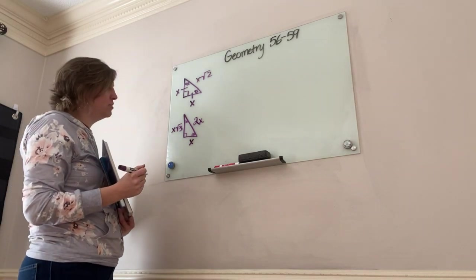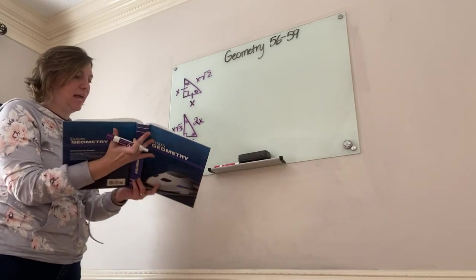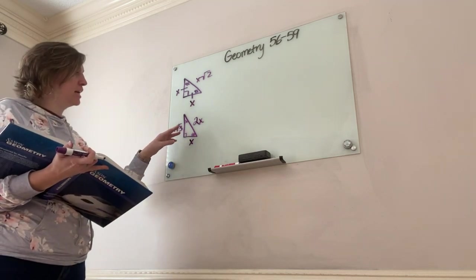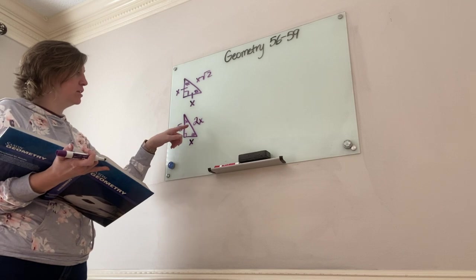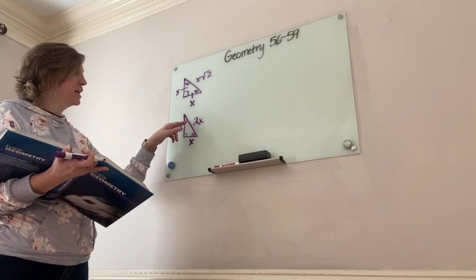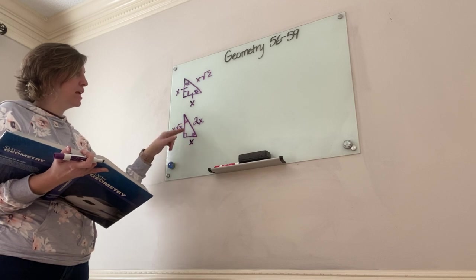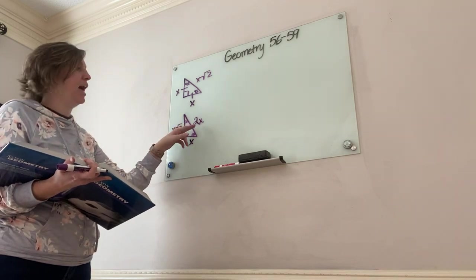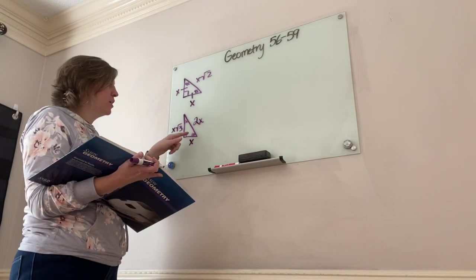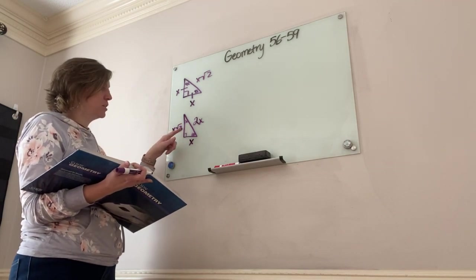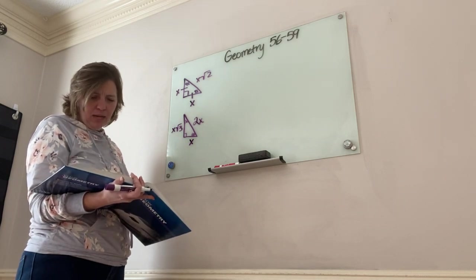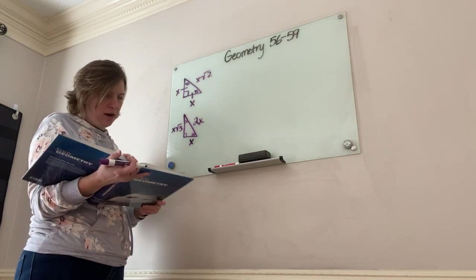It looks a little bit confusing, but if you understand this relationship, you can easily solve it. Your book uses 1 and 2 notation, but basically whatever side is opposite 30, the hypotenuse is going to be double that — just multiply times 2. And whatever was opposite 30, multiply times √3 to get the side opposite 60. Let's look at some examples.